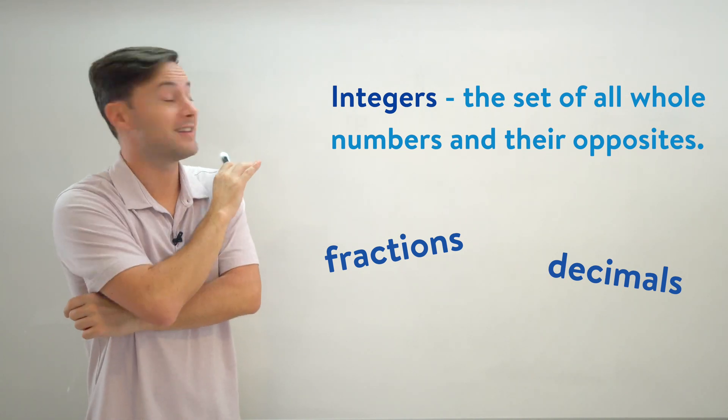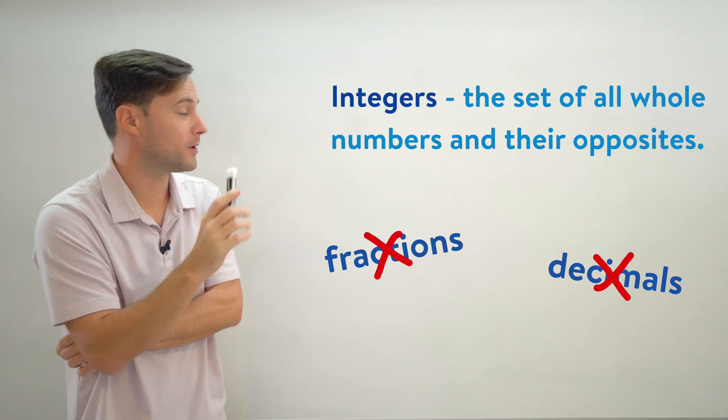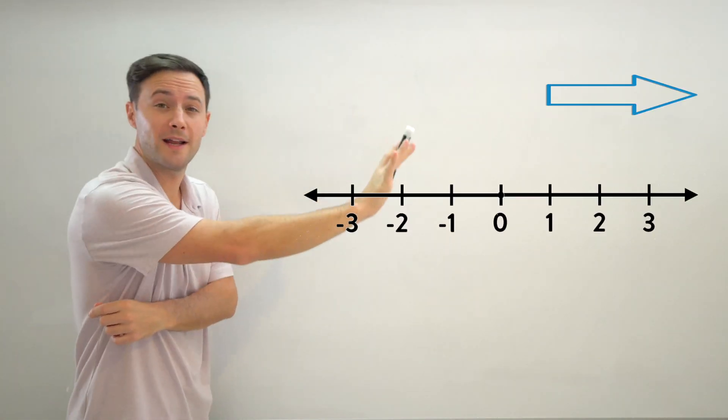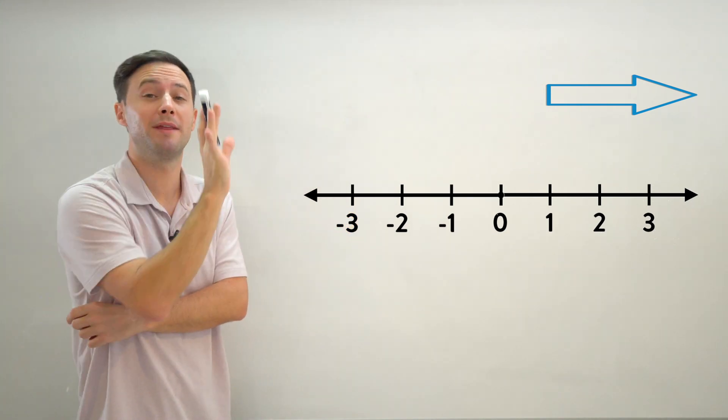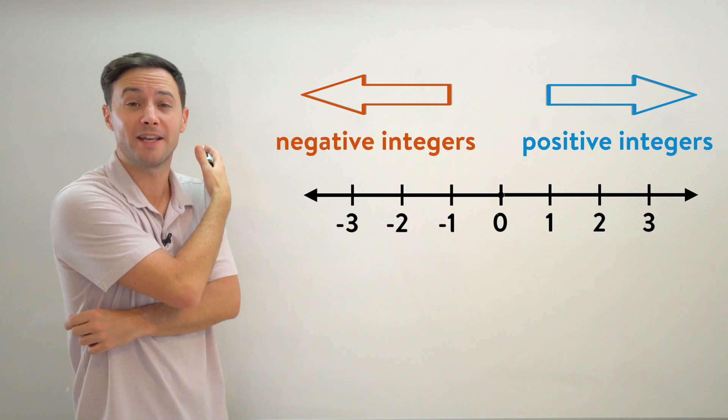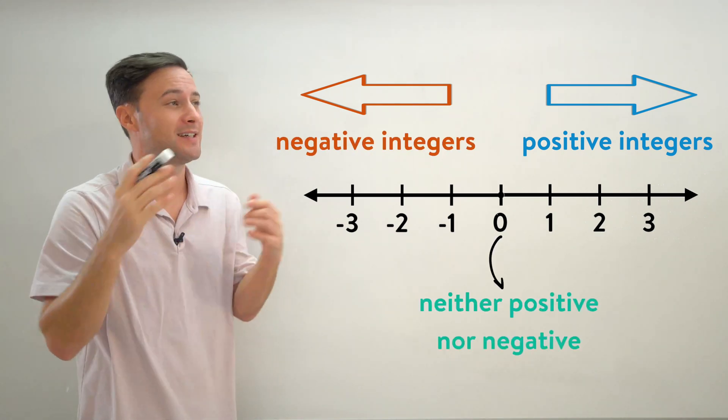If we look at a number line, zero's right in the middle. If we go to the right of zero on the number line, those would be the positive integers, and to the left naturally would be the negative integers. Zero is neither positive nor negative. You can just think of zero as like neutral.